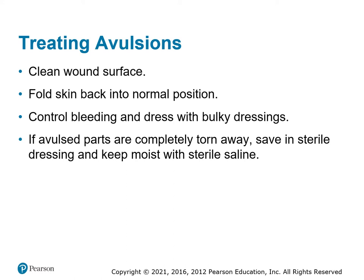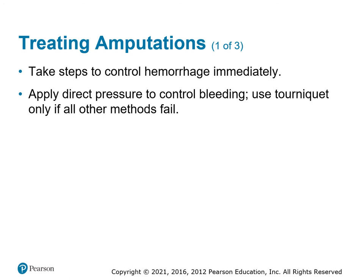Avulsions are ripping of skin away from the body — scalping is a good example. Clean the wound, fold the skin back into place, and control bleeding with bulky dressings. If the skin is torn away, keep it in a sterile, moist dressing. Key principle: if we're trying to save an organ or tissue, keep it moist. If we're trying to stop bleeding, use dry dressing because we want to suck the plasma out and allow the platelets to clot. Saving tissue = moist; stopping bleeding = dry.